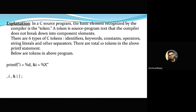In a C source program, the basic element recognized by the compiler is the token — a unit that the compiler doesn't break down further. There are six types of tokens: identifiers, keywords, constants, operators, string literals, and separators. There are a total of 10 tokens in the printf statement, including printf, the parentheses, the format string, the comma, i, %d, %x, i, i, and the semicolon.